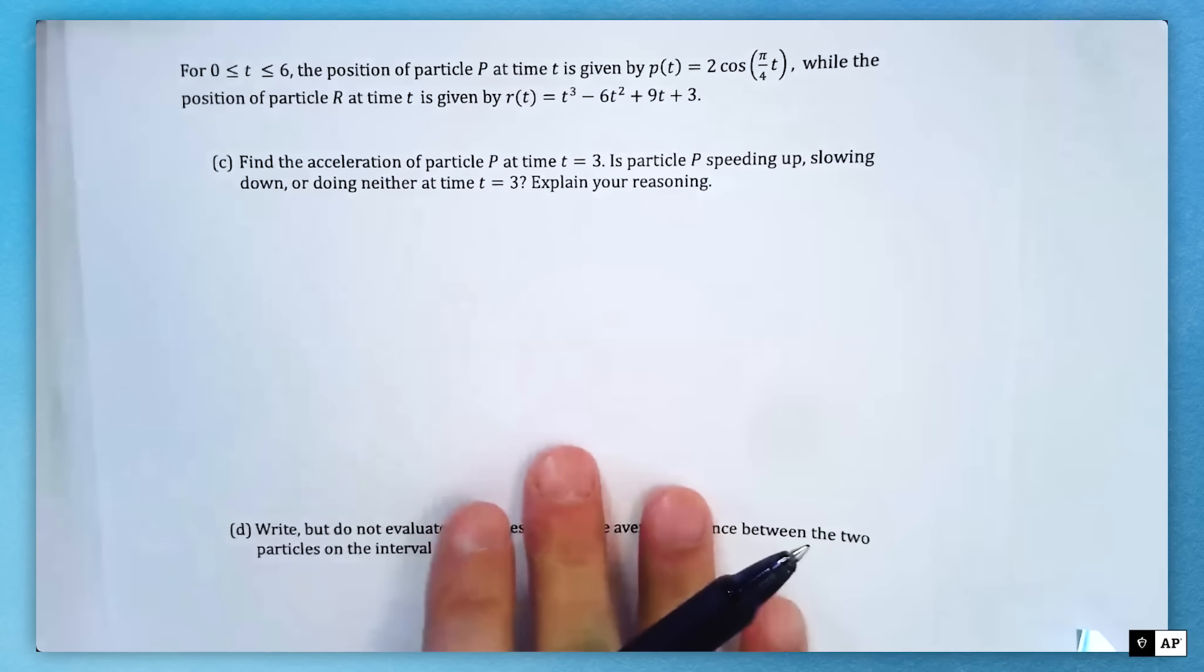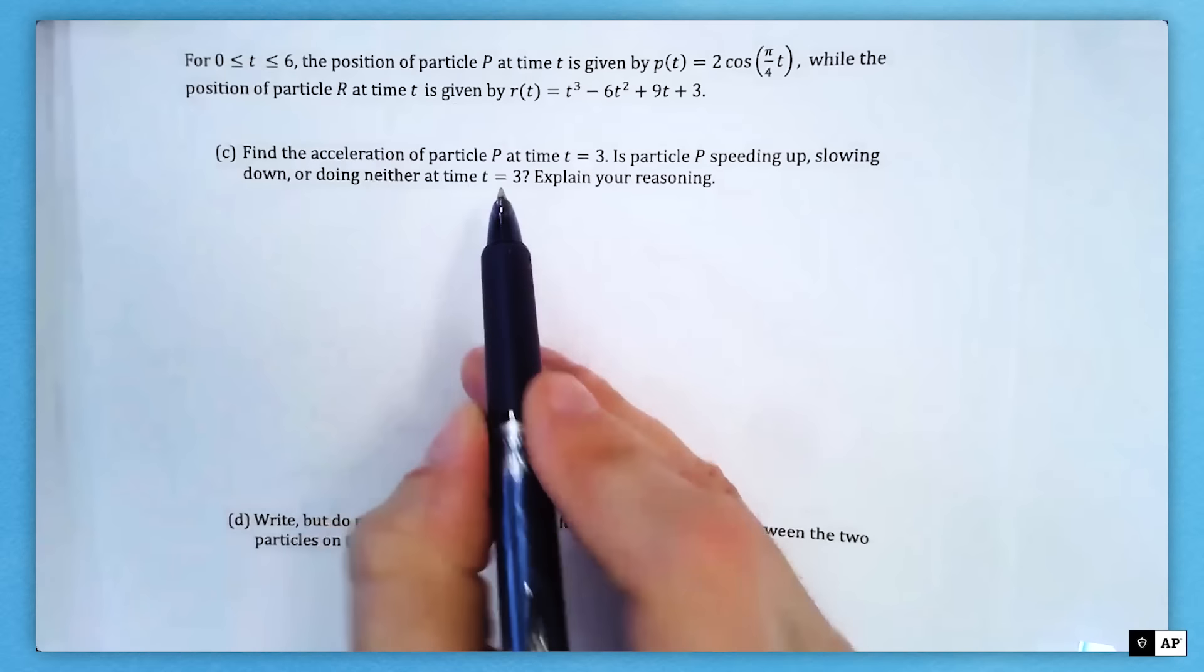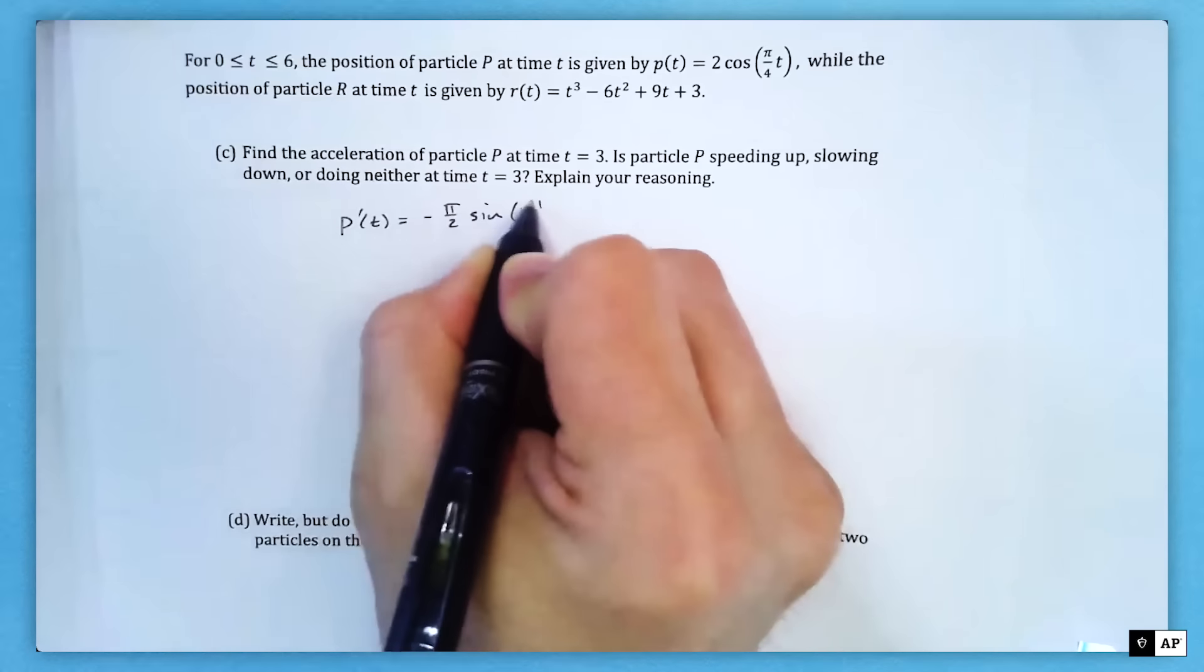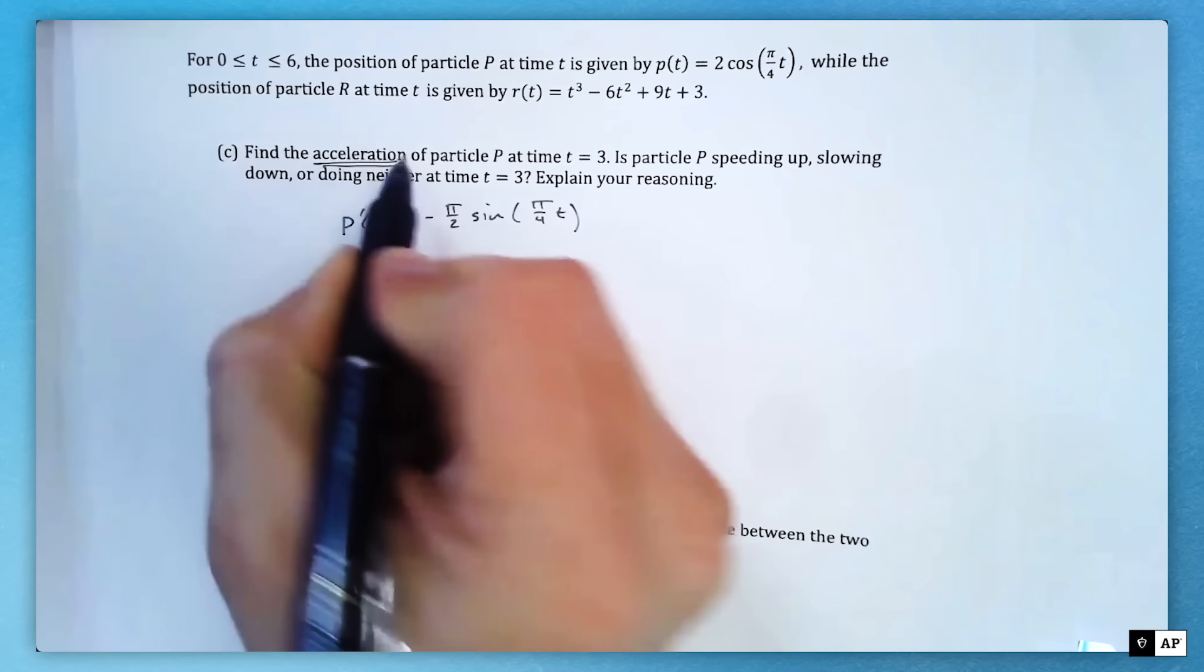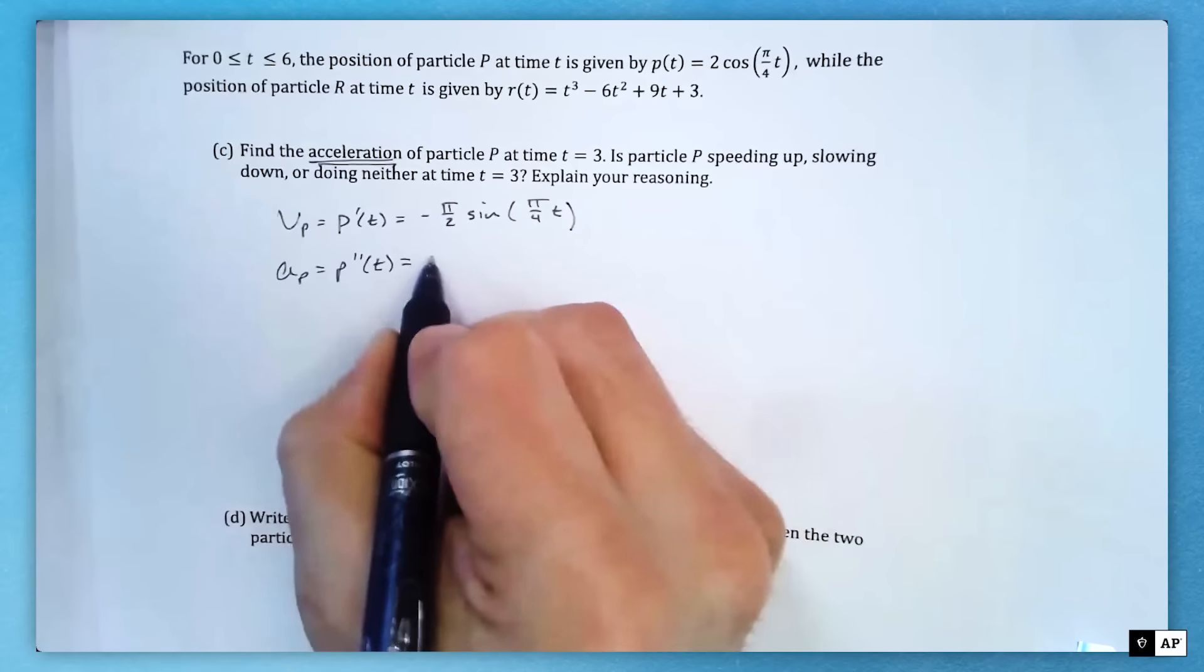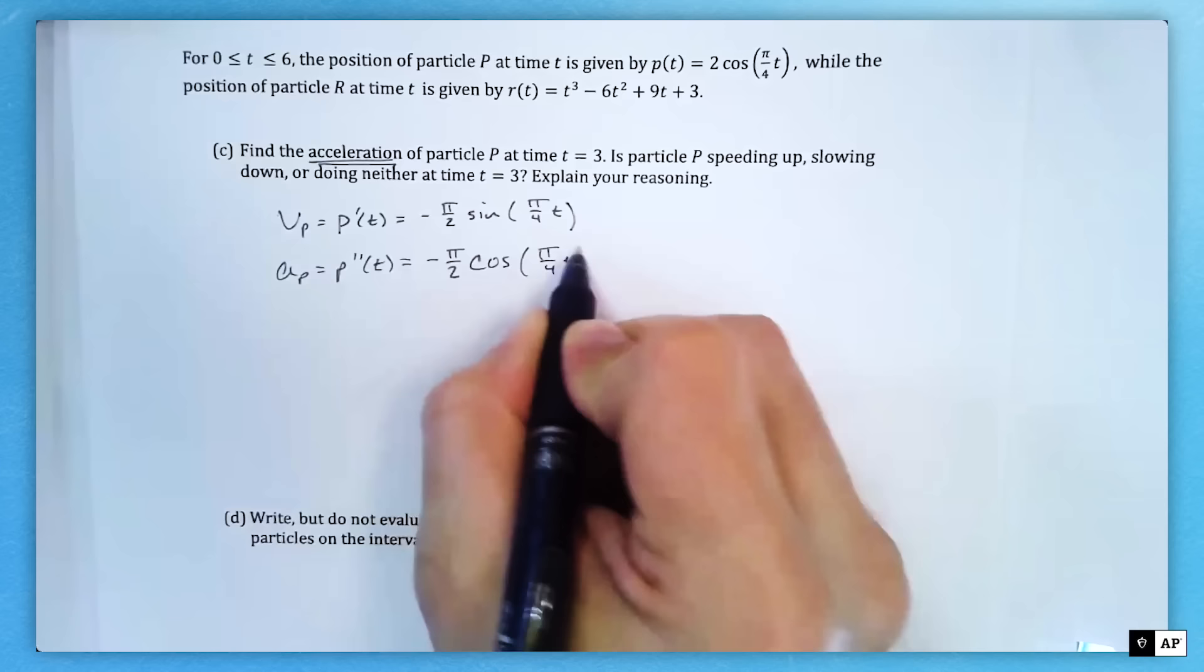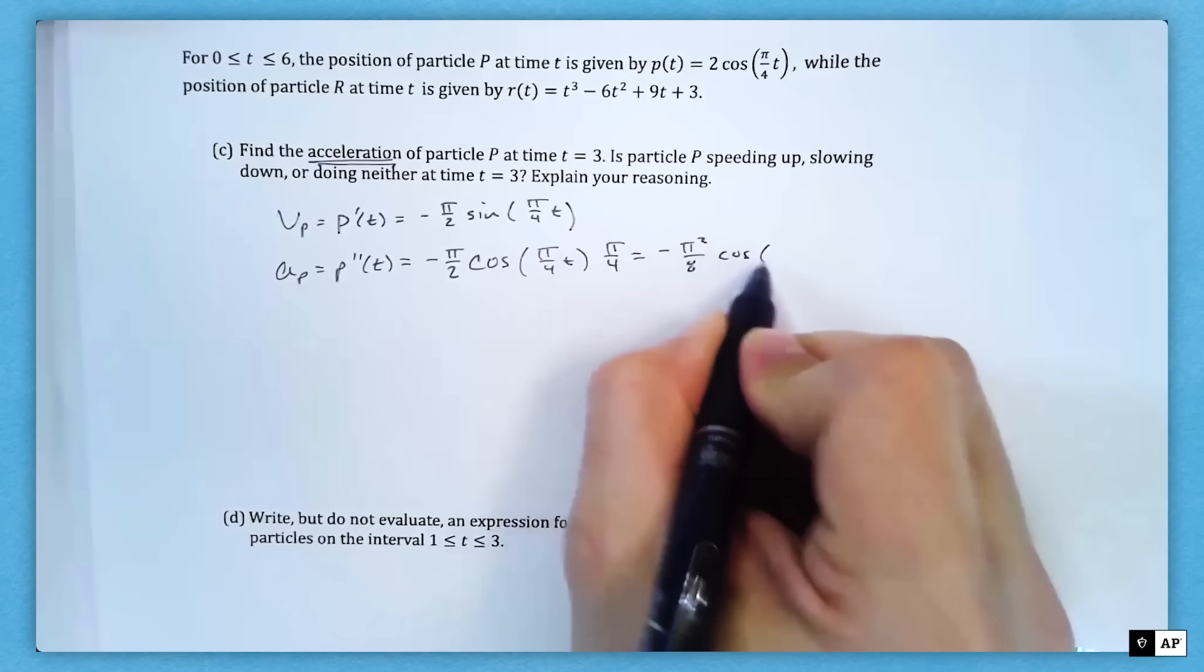So those are my two intervals where they're traveling in opposite directions: (0,1) and (3,4), because the signs of the velocity are different. We're looking for where the signs are opposite. The position of particle P at time t is given by P(t) equals 2 cosine π/4 t. Part C: we've got the acceleration now. I'm going to import my velocity. We found the velocity was negative π/2 sine of π/4 t. We want the acceleration, so acceleration is the second derivative of the particle's position.